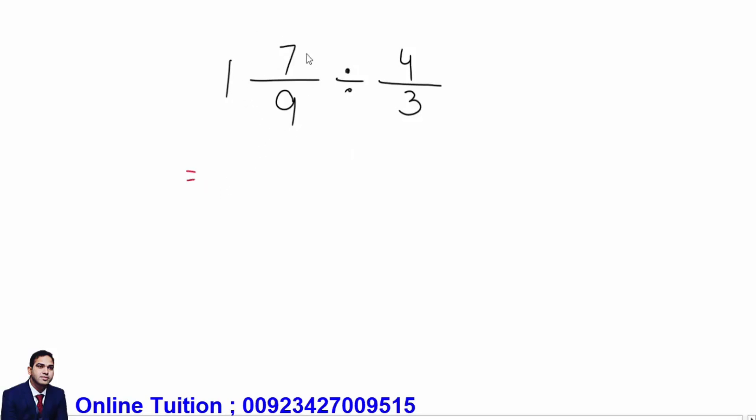First of all, change this mixed fraction into a simple fraction. For this, multiply this one with this nine - nine ones are nine. Now plus this seven into seven. This will be sixteen over nine.